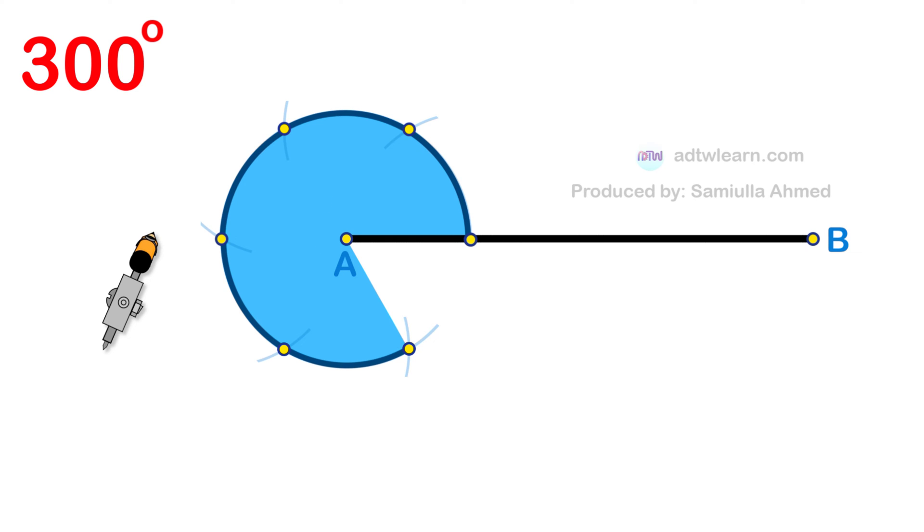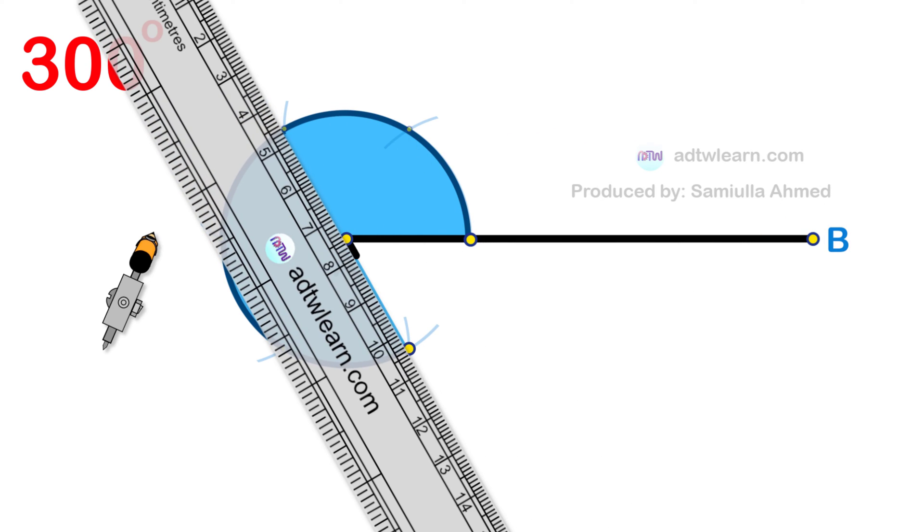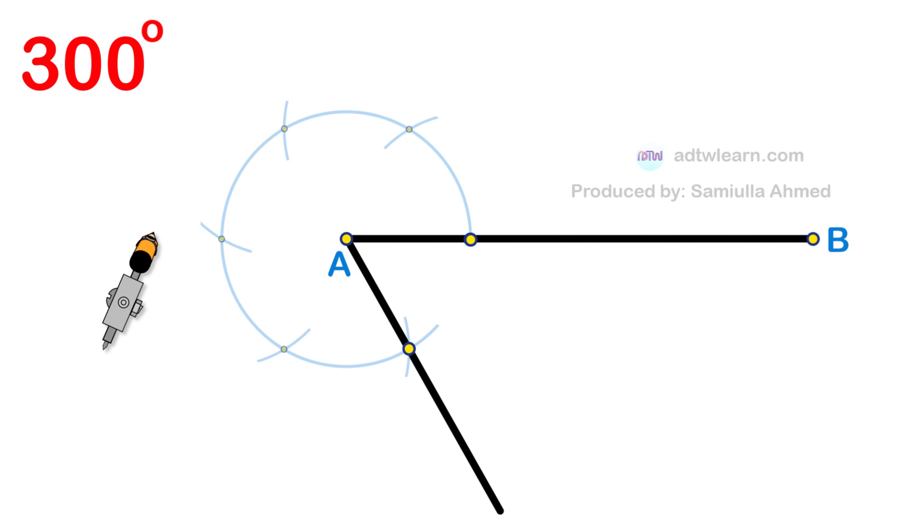Take a ruler and draw a line passing through this point from endpoint A of the line segment. Therefore, the angle from here to here will be 300 degrees.